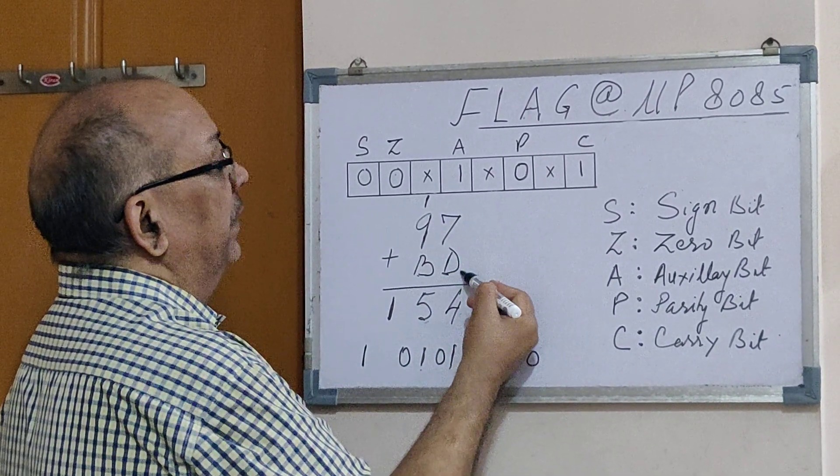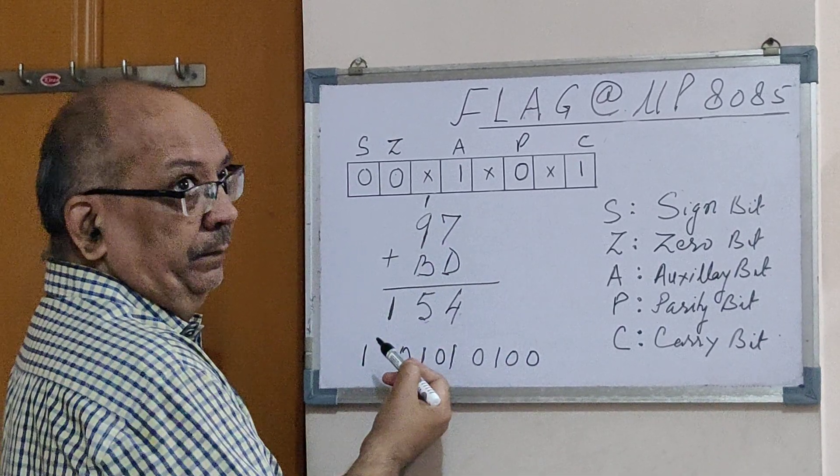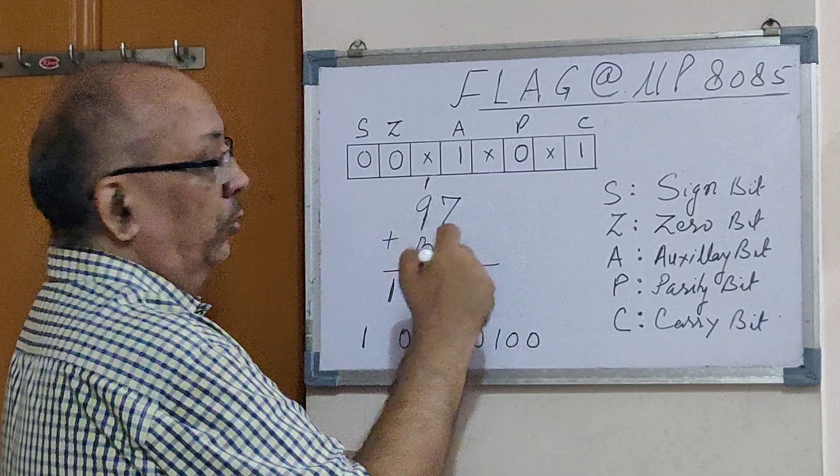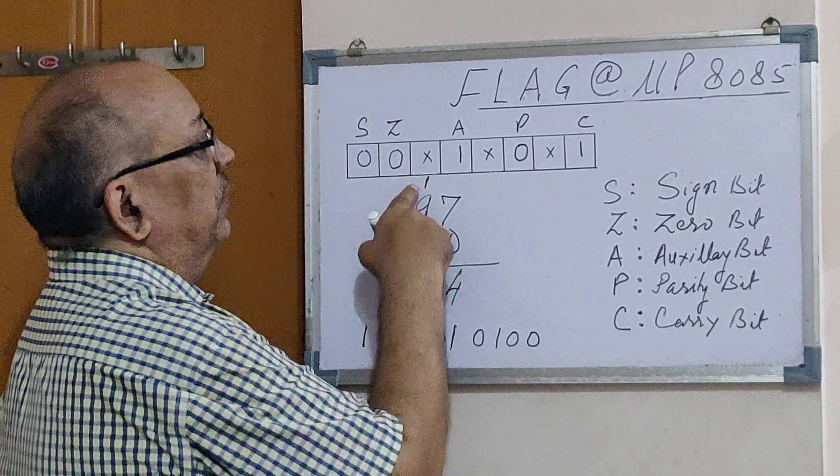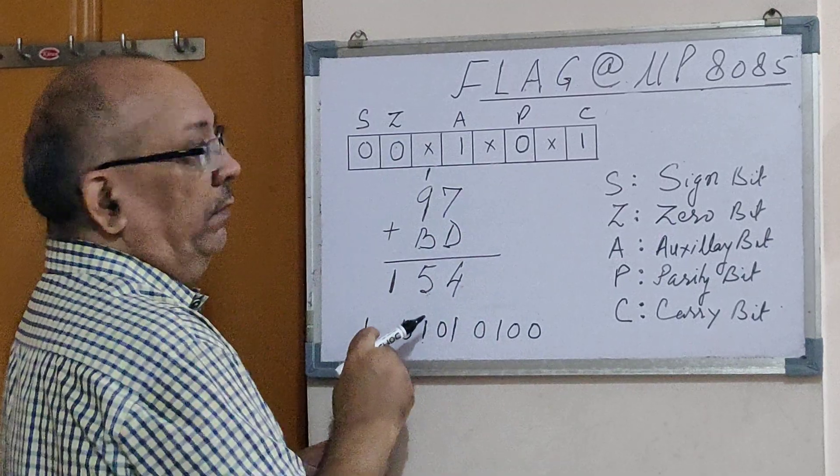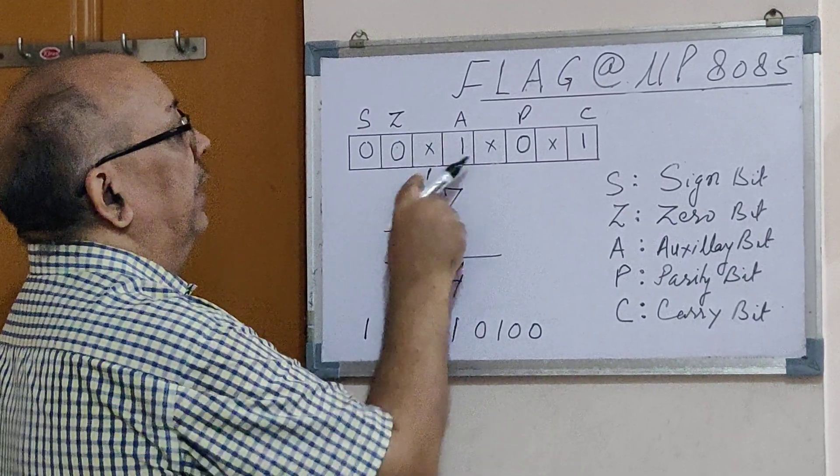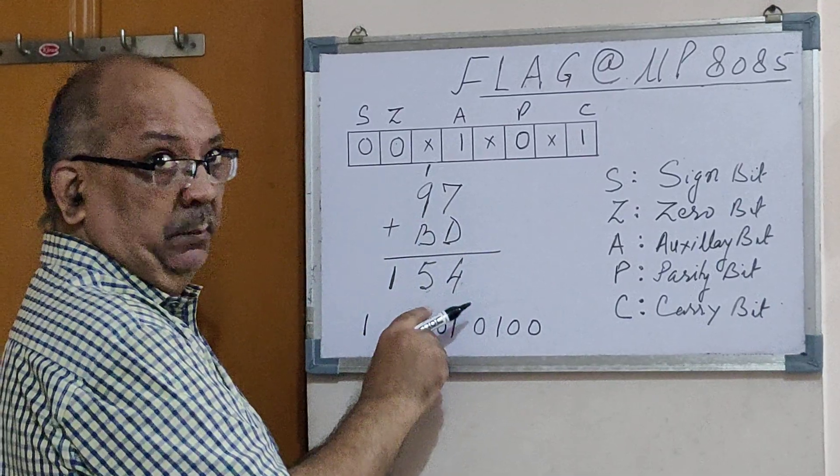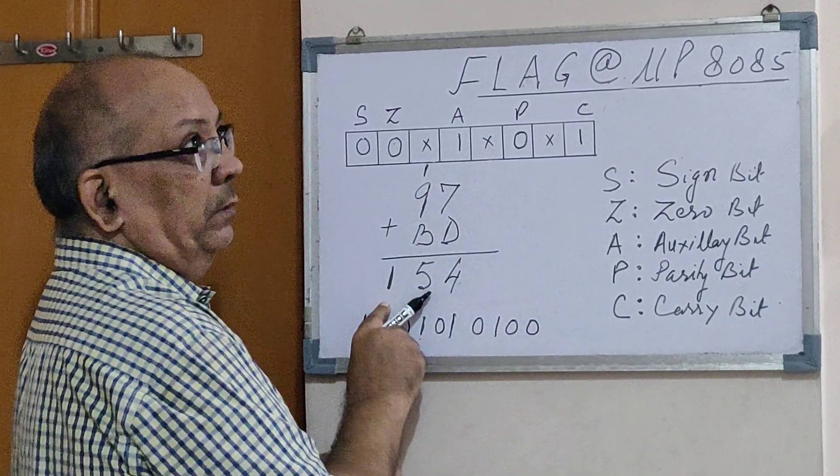So it will be 13 plus 7, that is 20. Out of 20, we will subtract 16, that becomes 4, and 16 goes as carry. Then further it is 9 plus 1 which is 10, this is nothing but 11. 11 plus 10 is 21. Out of 21, we will subtract 16. It is nothing but 5, and hence the final carry is 1.